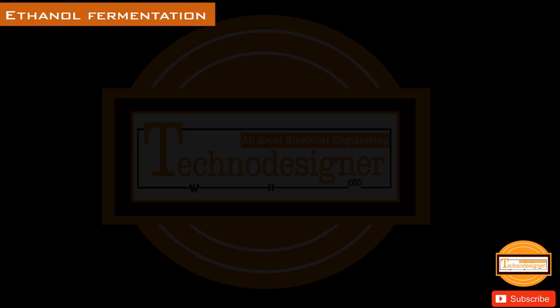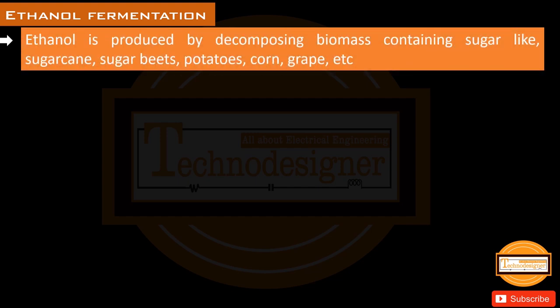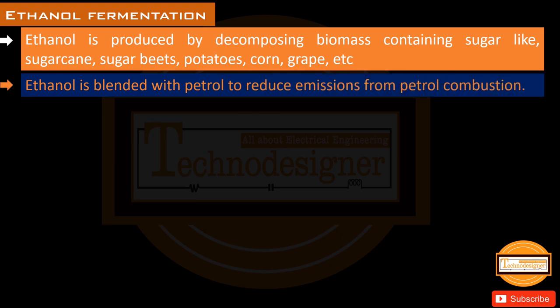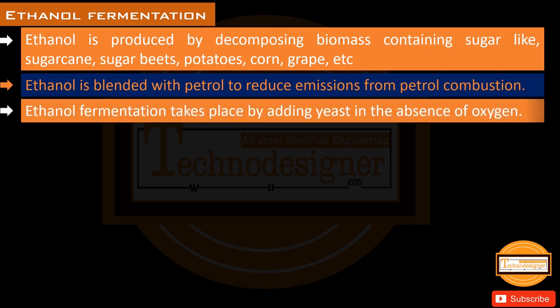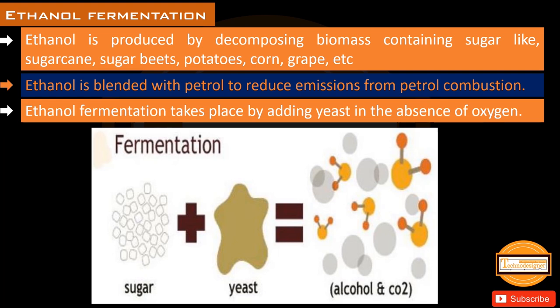Ethanol fermentation is another useful biochemical conversion process. In ethanol fermentation, ethanol is produced by decomposing biomass containing sugar, like sugarcane, sugar beets, potatoes, corn, grapes, etc. Ethanol is blended with petrol to reduce emissions from petrol combustion. Ethanol fermentation takes place by adding yeast in the absence of oxygen. Sugar and yeast are added to form carbon dioxide and alcohol.